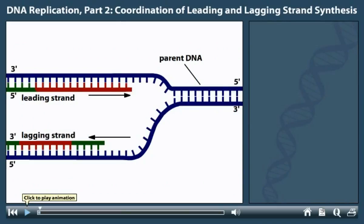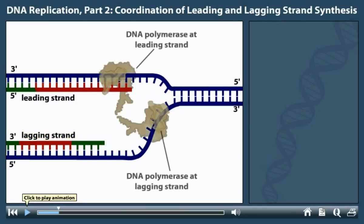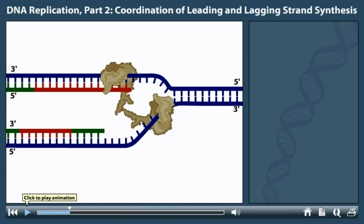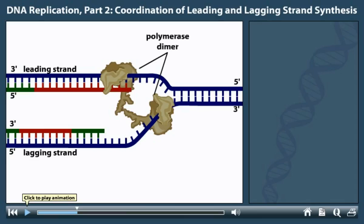DNA is replicated by continuous synthesis of a leading strand and discontinuous synthesis of a lagging strand of the DNA molecule. Coordination between leading and lagging strand synthesis is achieved by the dimerization of DNA polymerase molecules at the replication fork. The DNA polymerase moves with the replication fork.